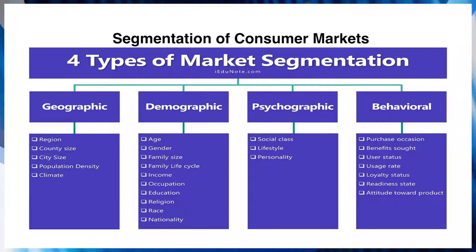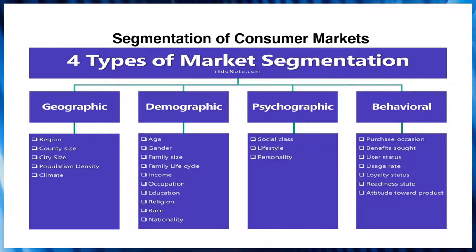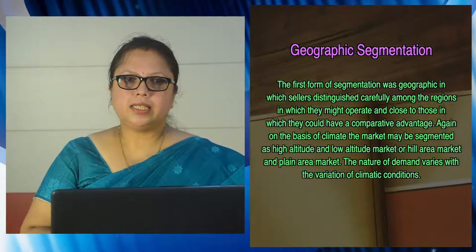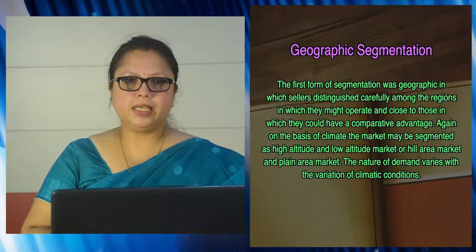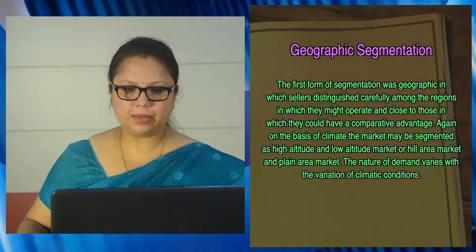Here I will be discussing the segmentation of consumer markets. As mentioned in my first video lecture, there are four types of market segmentation: geographic, demographic, psychographic, and behavioral segmentation. Under geographic segmentation, variables include region, country, city size, population density, and climate.